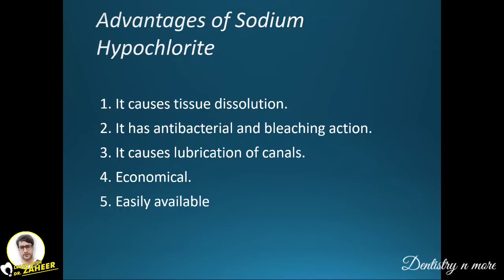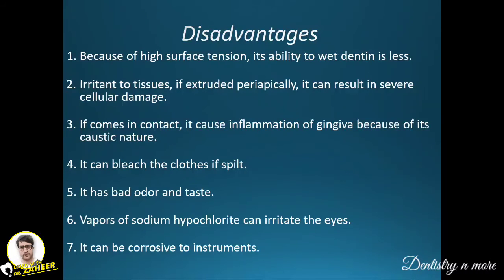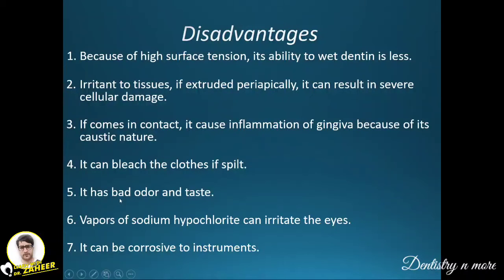Advantages of sodium hypochlorite include tissue dissolution, antibacterial and bleaching action, canal lubrication, and it is economical and easily available. However, due to its high surface tension, its ability to wet dentine is less. It is quite irritant to tissues — if extruded periapically it can cause severe cellular damage and gingival irritation due to its caustic nature. It can bleach clothes, has a bad odor and taste, and its vapors can irritate the eyes. It is also corrosive to operative instruments.